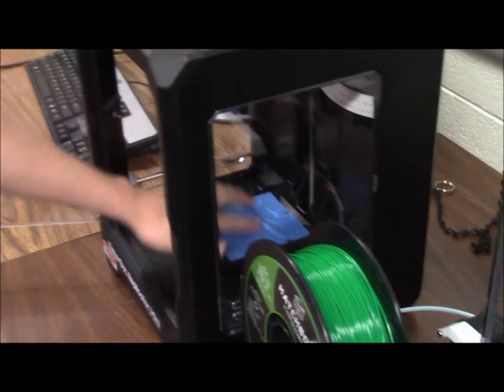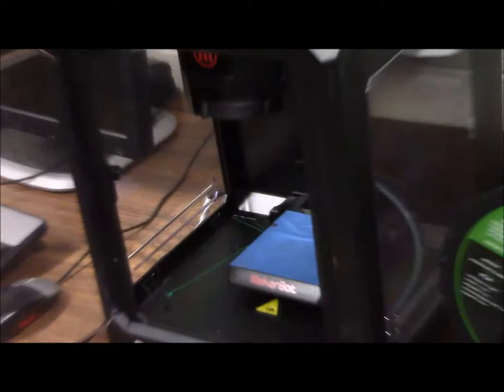This is the MakerBot. This is the one I've used the most. It can print about 3x3x4 or 5 inches. It's good for little things like if you're doing a keychain. I made a couple of coasters with it.